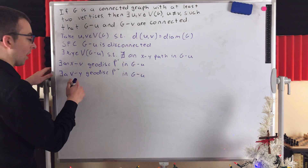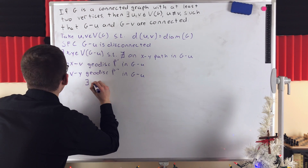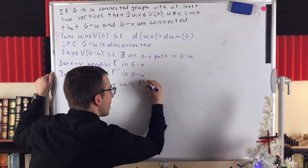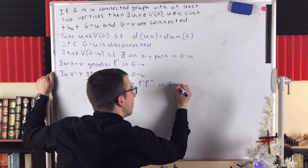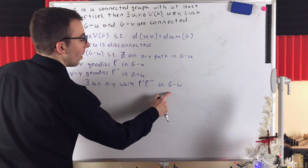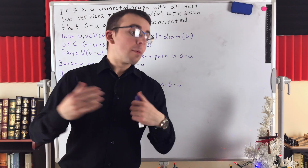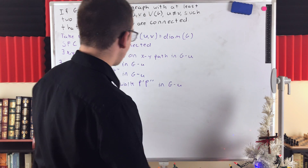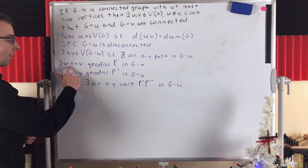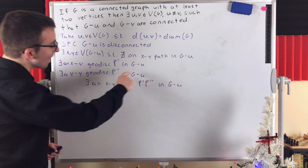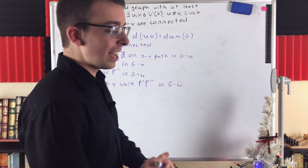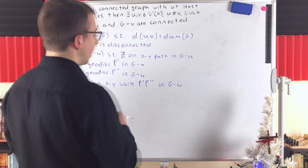Thus, there exists an XY walk in G minus U, obtained by traveling along P prime followed by P double prime: go from X to V via P prime, then from V to Y via P double prime. By a previous theorem — walk implies path — since there is an XY walk in G minus U using both geodesics, there must be an XY path in G minus U.